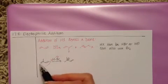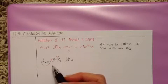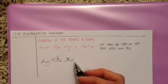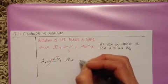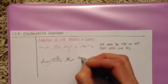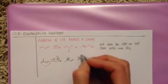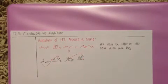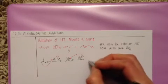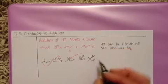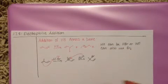So it doesn't really matter how you start the mechanism. But this way, at least, we're starting with a really stable carbocation. The bromide ion that's formed when the HX bond breaks is going to go where we would expect it to go. And we'll get this product just like we would expect.